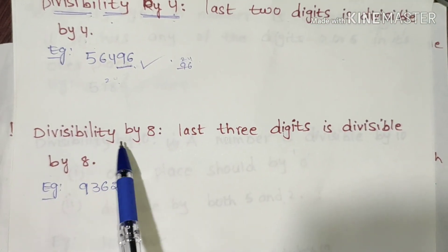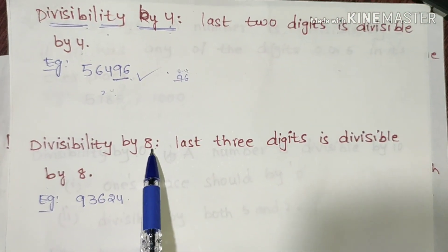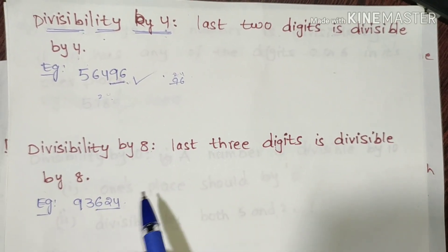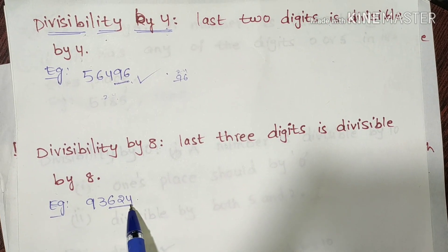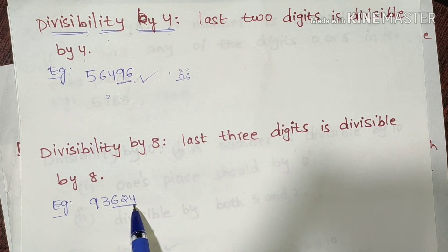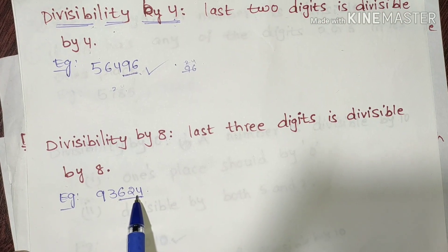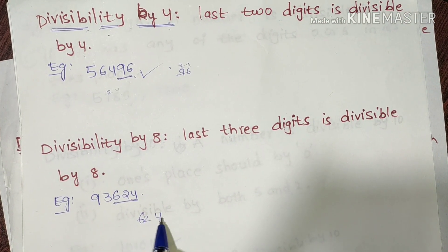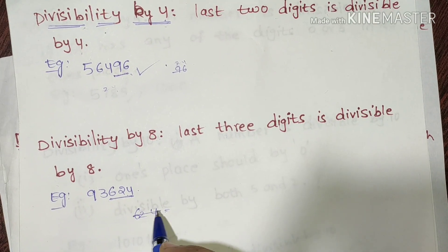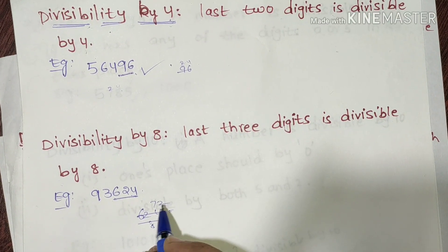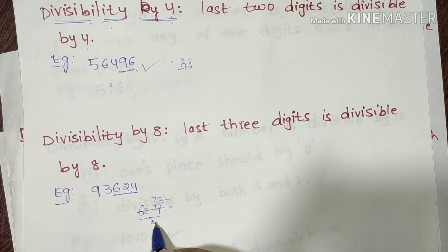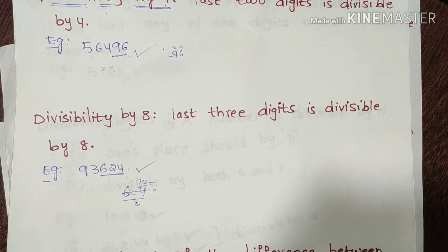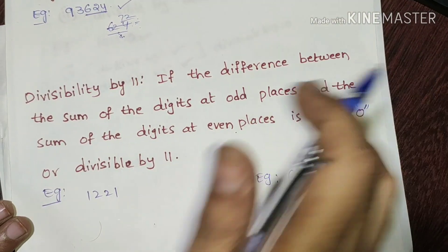Divisibility by 8: the last three digits of the number must be divisible by 8. For example, if the last three digits are 624, since 624 is divisible by 8 (8 × 78 = 624), the divisibility by 8 condition is satisfied.